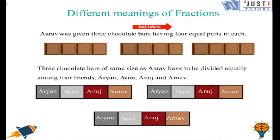Now let's learn some different meanings or different ways of writing fractions. Here Aarav was given 3 chocolate bars of equal sizes that he wanted to divide among his 4 friends. Each chocolate bar has 4 equal parts in it. So he decided to give 1 part of this chocolate bar to Aryan, 1 part to Ayaan, 1 part to Anuj and 1 part to Arnav. Same he did with the other 2 bars.